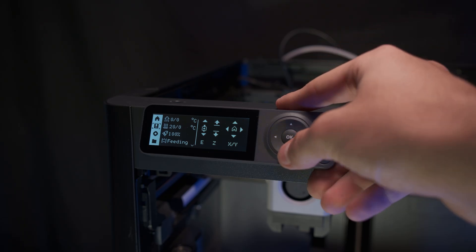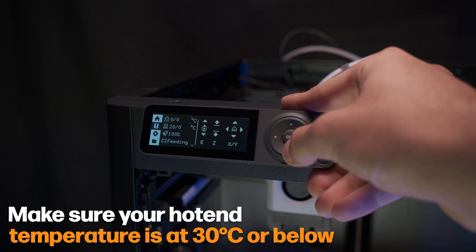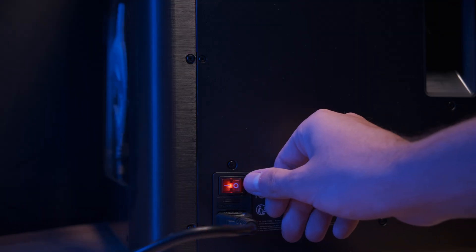Go to the Temperature and Access settings on the interface. Make sure your hotend temperature is at 30 degrees Celsius or below, and turn the power off on the back of the machine.